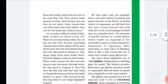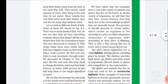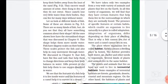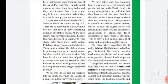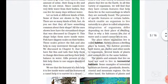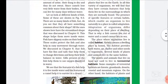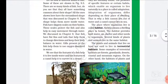We have taken only two examples from the vast variety of animals and plants that live on Earth. In all varieties of organisms, we will find that they have certain features that help them live in the surroundings in which they are normally found. The place where organisms live is called habitat.